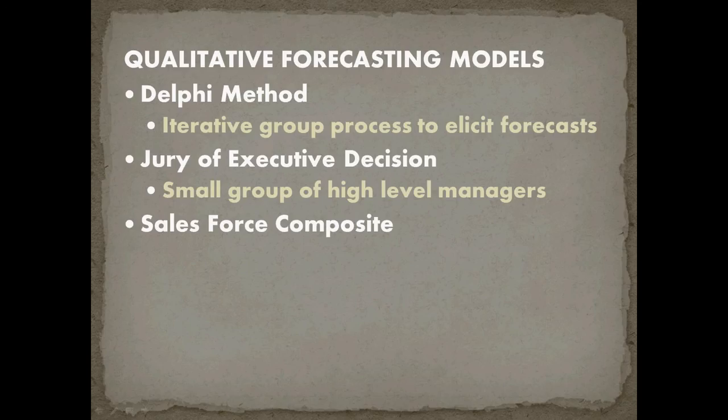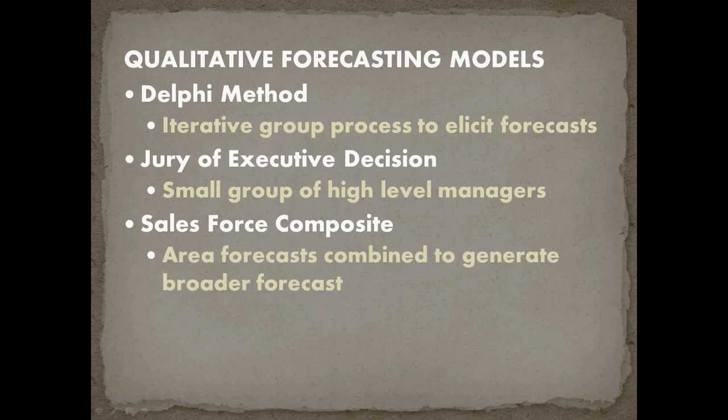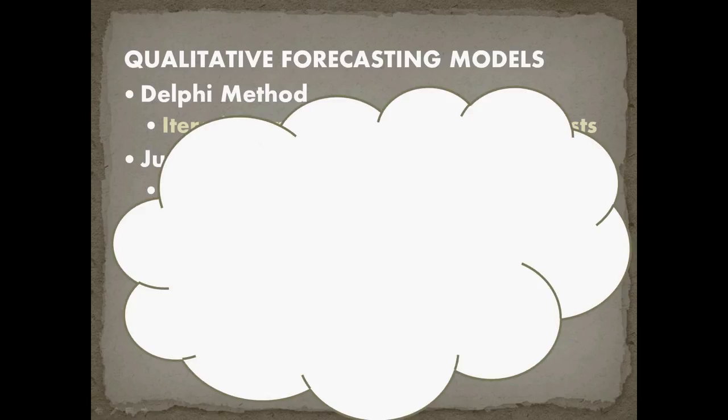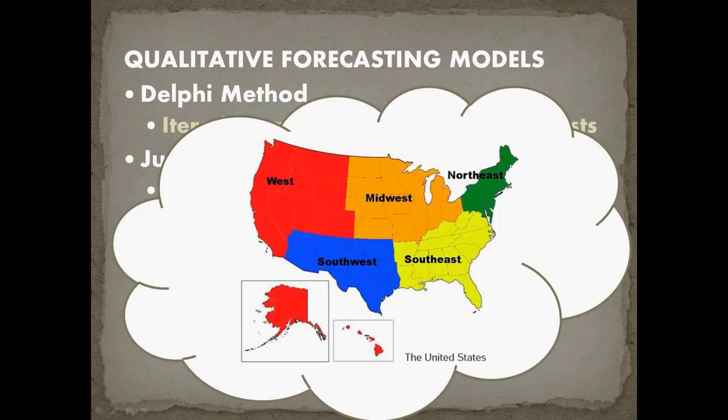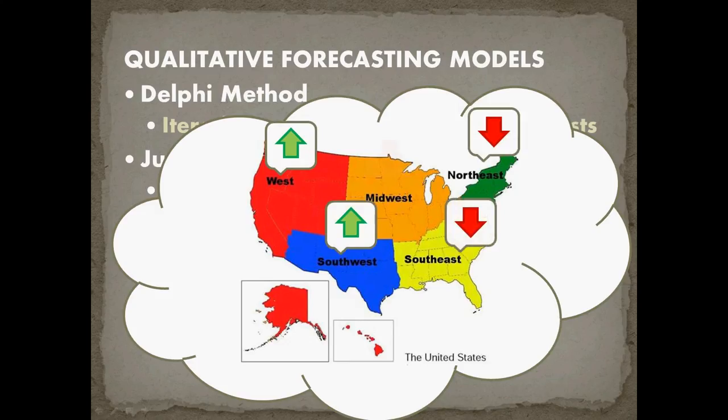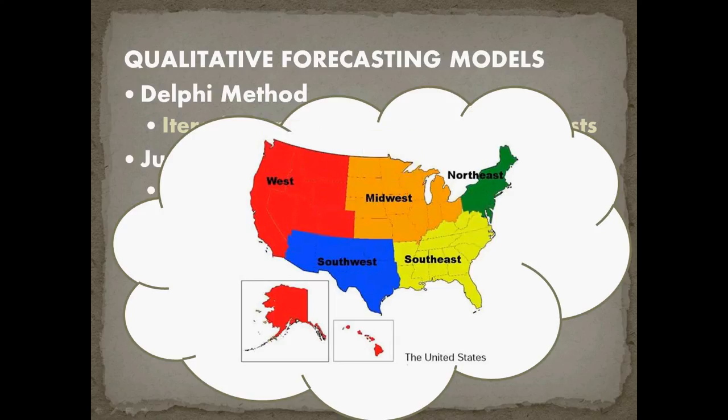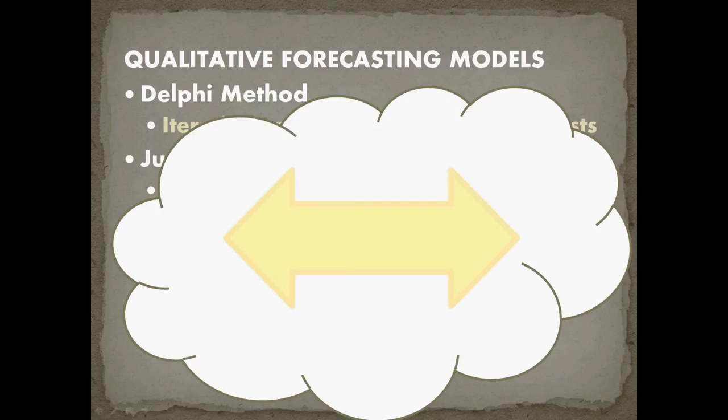Sales force composite is another qualitative forecasting method that's quite common and this is when you have area forecasts and we combine them to generate a broader forecast. So imagine if you've got an organization and it's spread across the United States and it's divided into West, Midwest, North, East, Southwest, and Southeast. What you have is these regional managers predict the next quarter sales and what's going to happen so you can develop your inventory. So you're going to get reports back from all the different regions in the United States and you combine them to make your overall forecast which looks like sales are going to stay pretty stable.